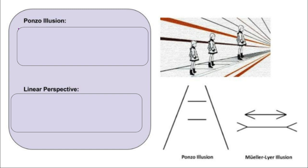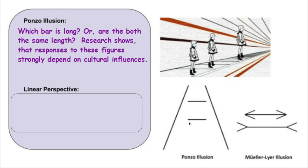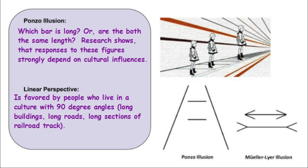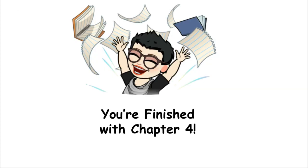The Ponzo illusion asks: which bar is longer, or are both the same length? Research shows that responses to these figures depend on cultural influence — going back to Richard Gregory's research on people of South Africa. If you come from a culture where things are more circular, you might not fall prey to this. Linear perspective is favored by people who live in cultures with 90-degree angles — long buildings, railroad tracks, long roads, all of that. Thank you very much.